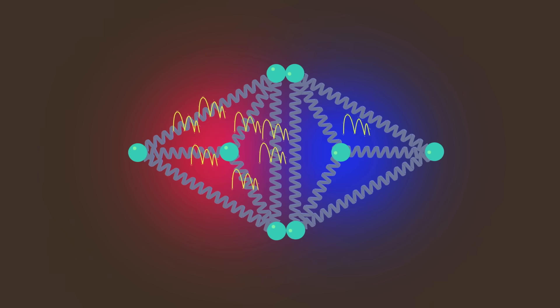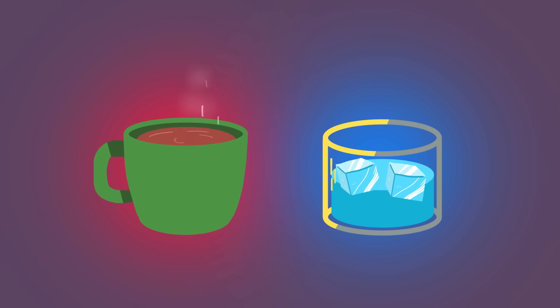Again, we see that because there are more ways to have dispersed energy and high entropy than concentrated energy, the energy tends to spread out. That's why if you put a hot object next to a cold one, the cold one will warm up and the hot one will cool down.